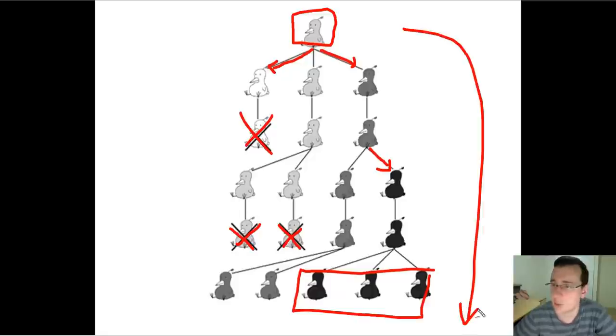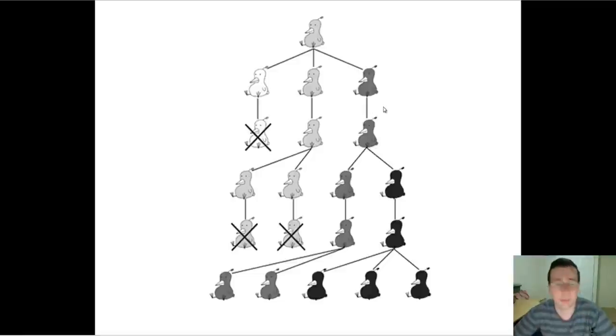As you see, across generations and time, because of the pressure to select for darkness, as mutations take place which make new looks show up, if that new look is favored, it becomes more common. If it's unfavored, like the first white one was, it becomes less common and disappears. That is the concept of natural selection.